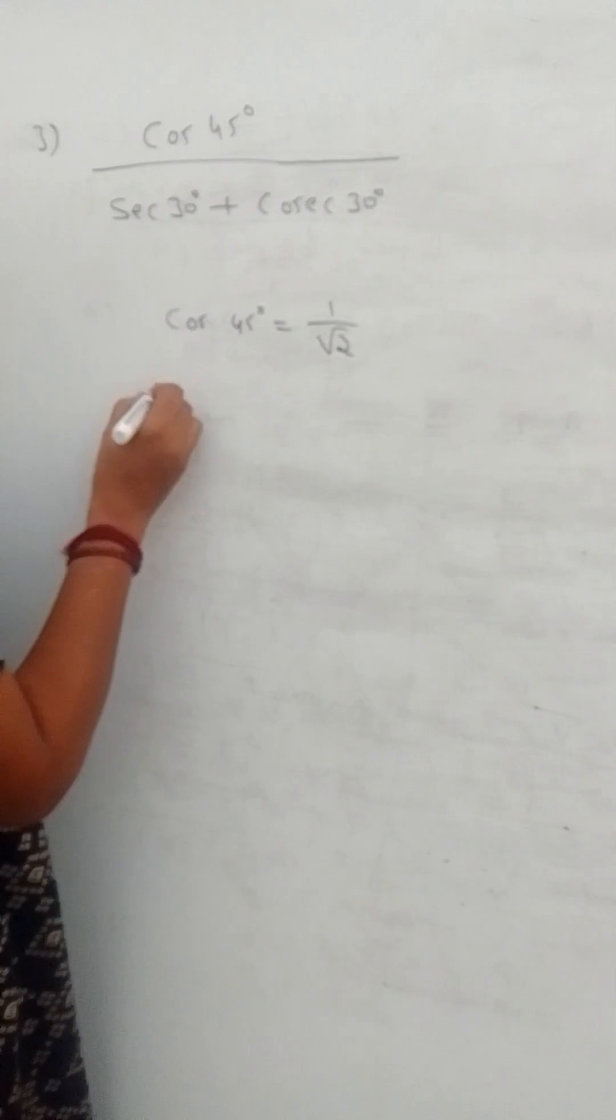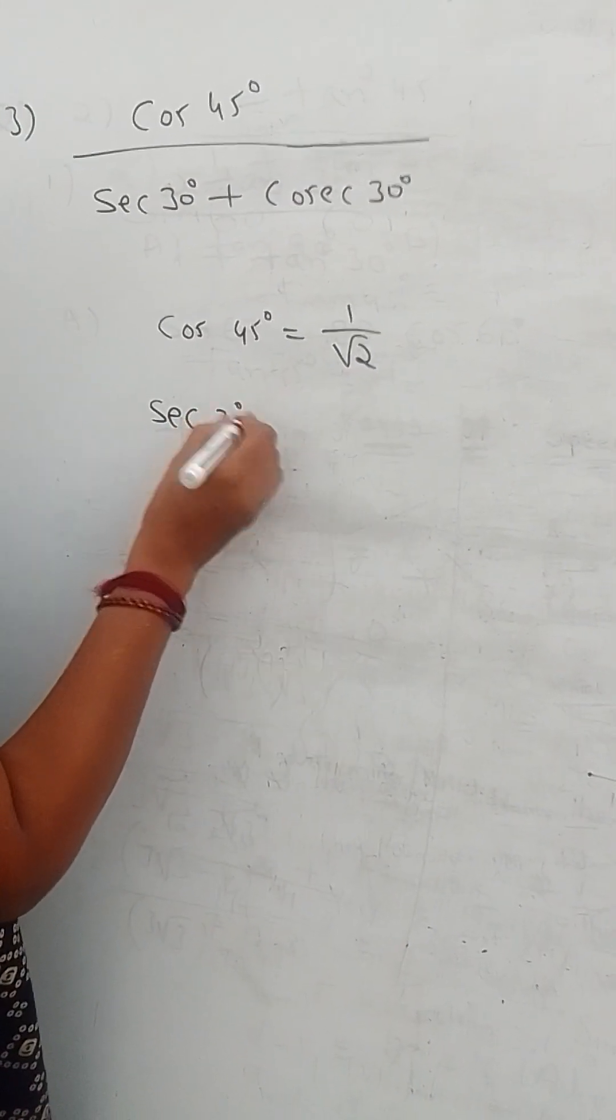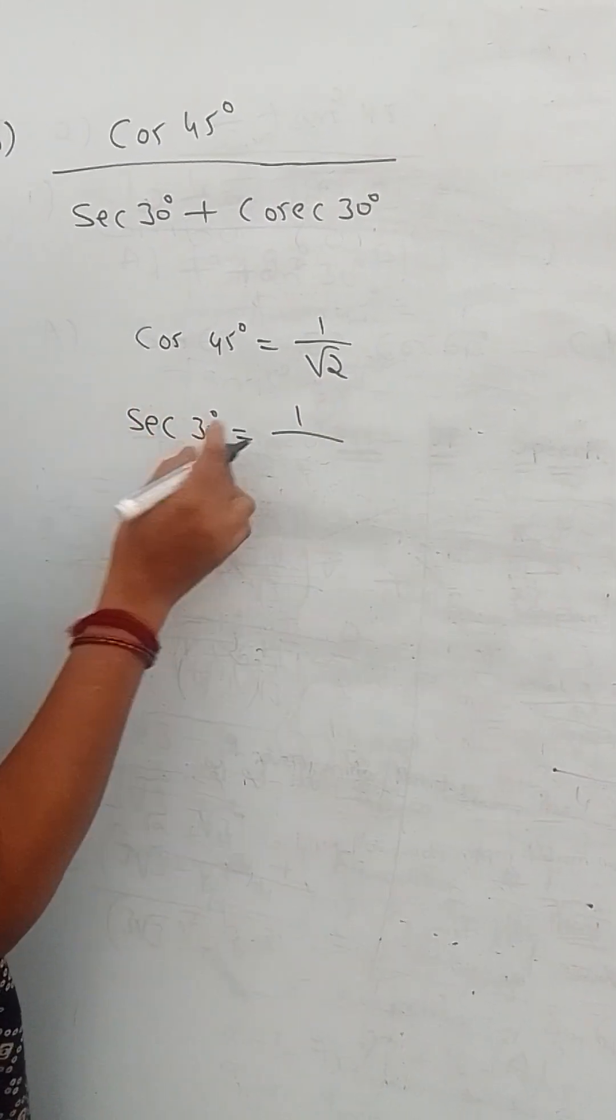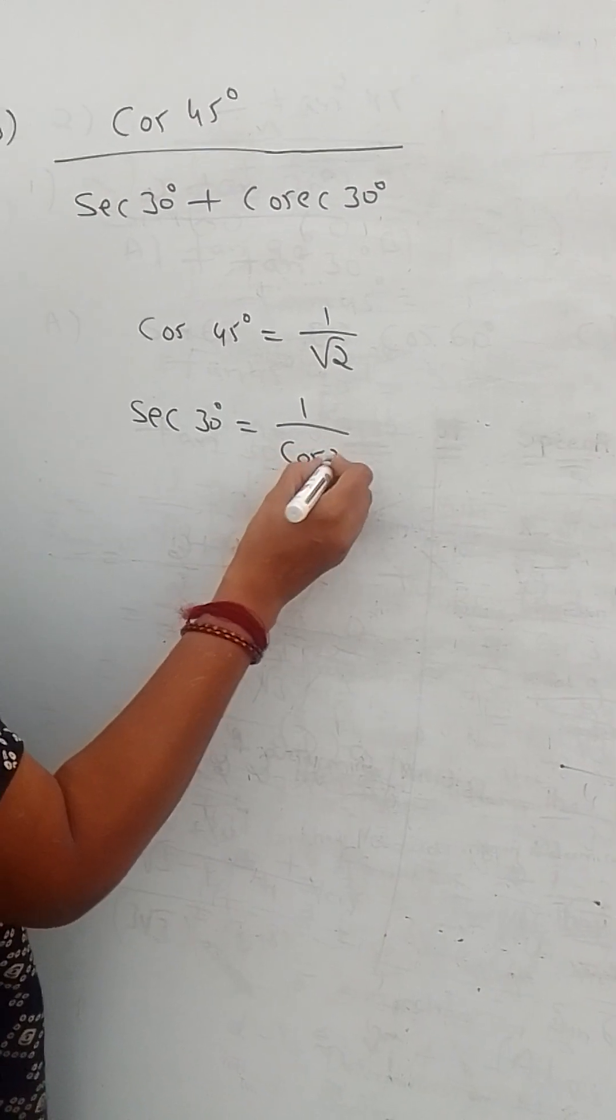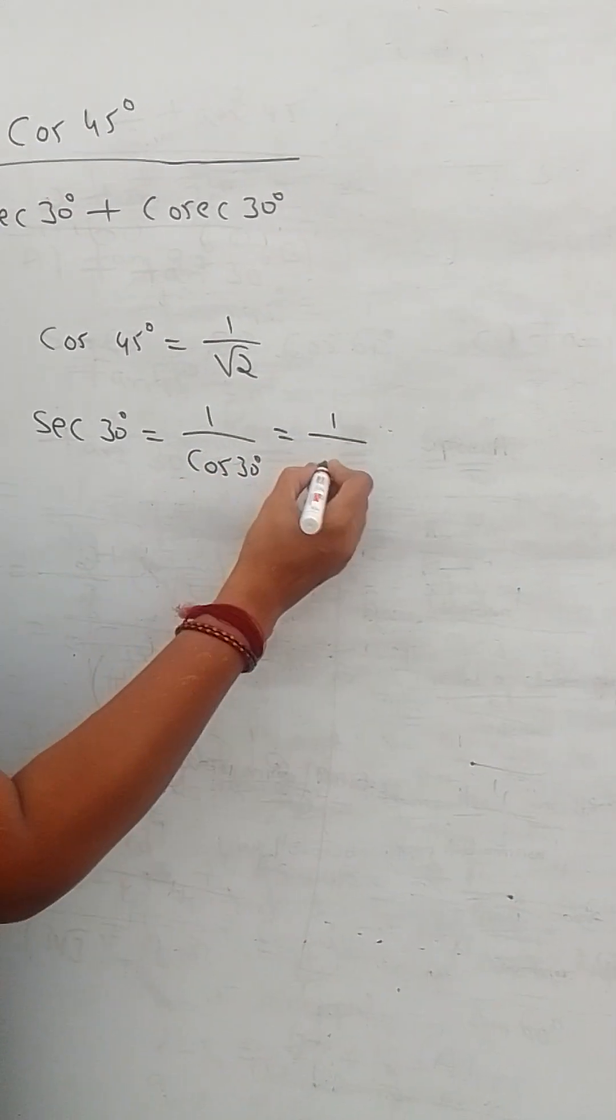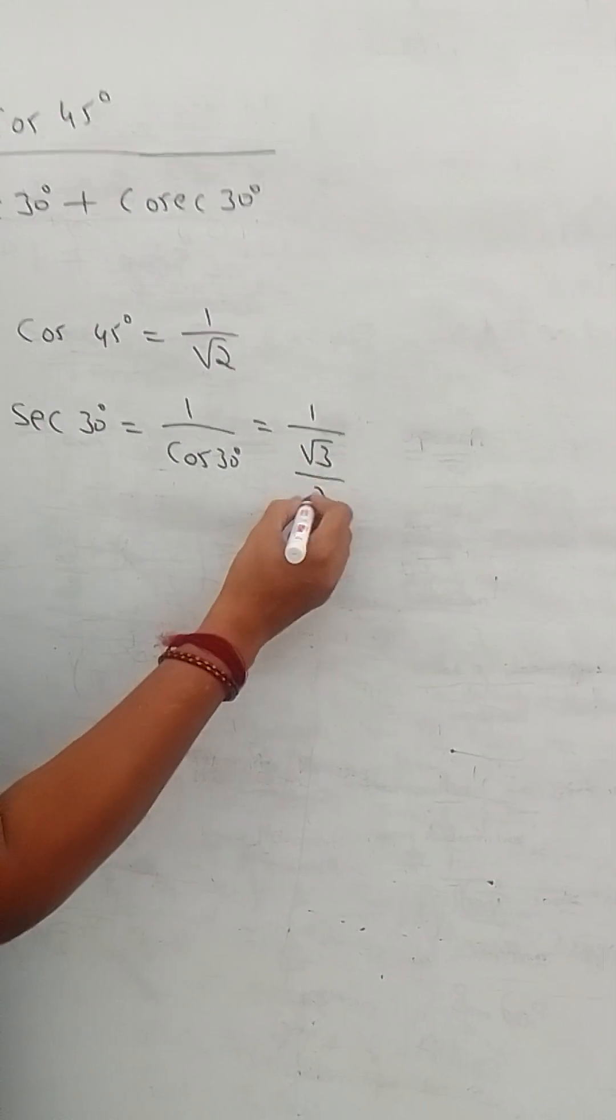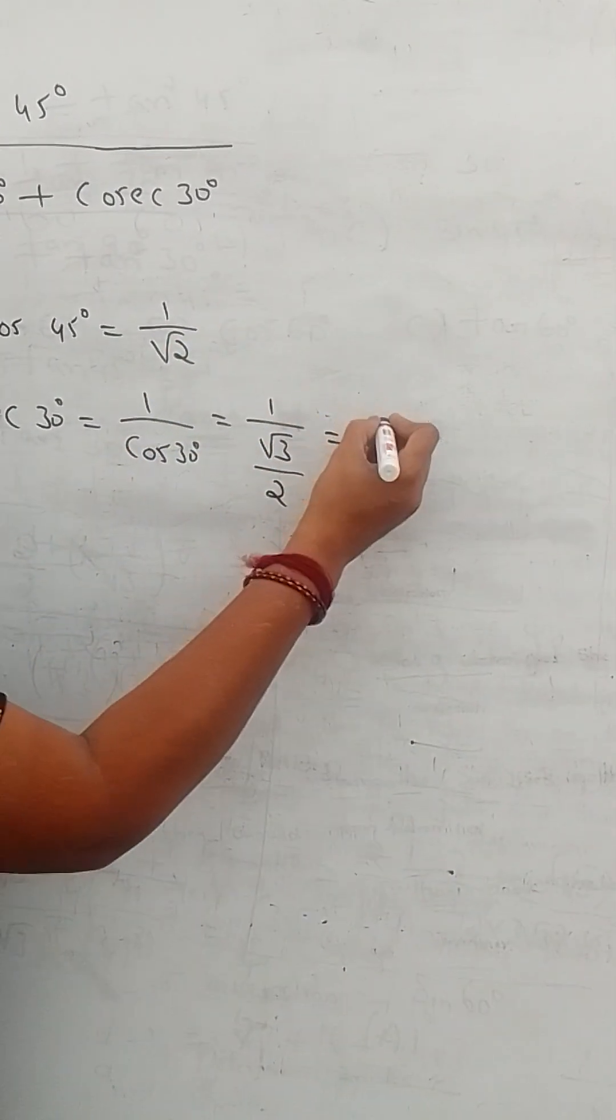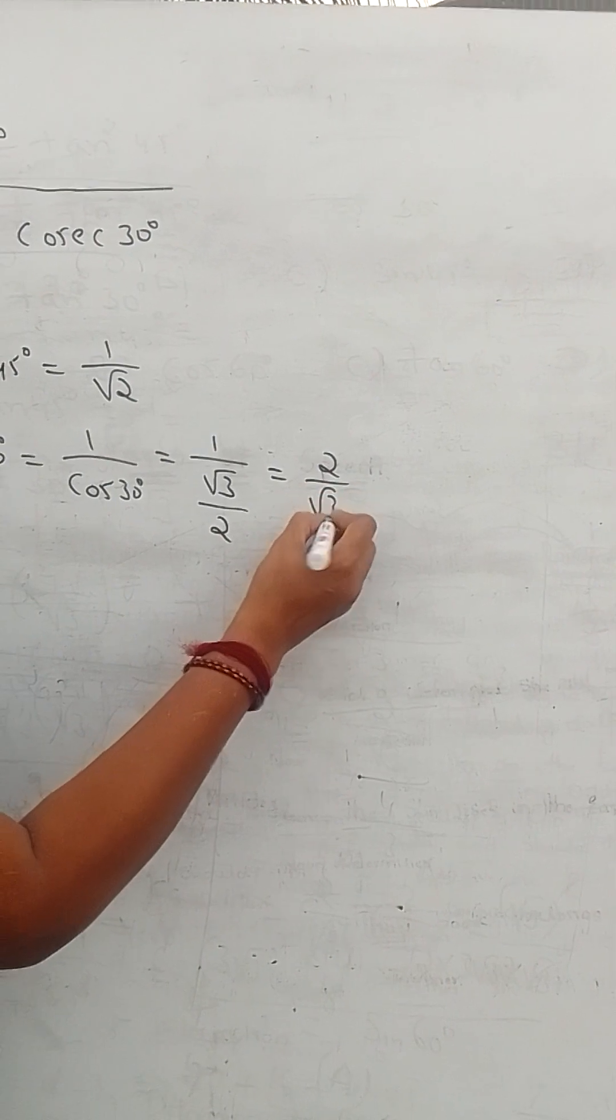Secant 30. Secant 30 is equal to 1 by cos 30, the reciprocal of cos 30. 1 by cos 30 is root 3 by 2. Then its reciprocal is 2 by root 3.